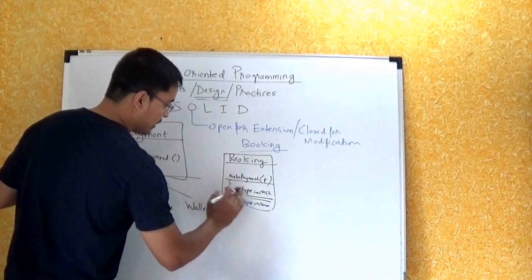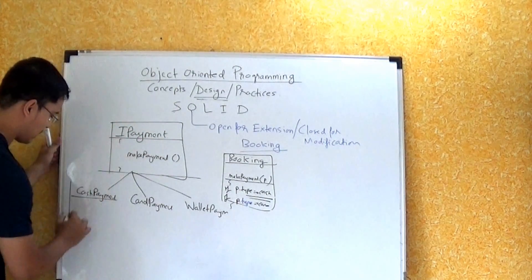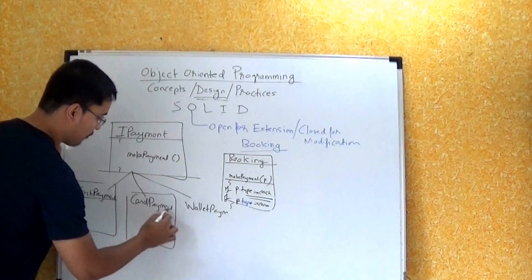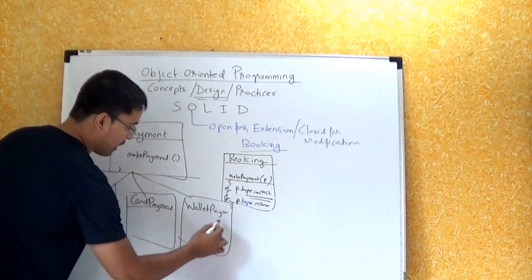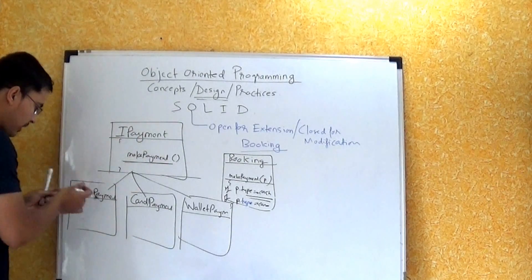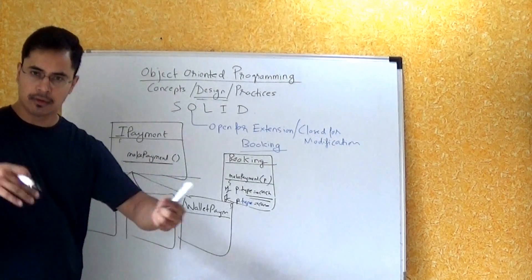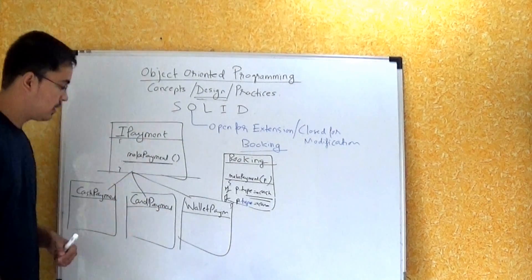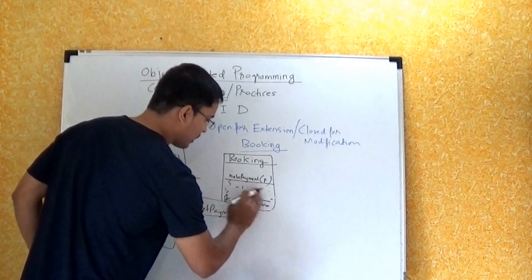And all these classes which are implementing this interface will provide their own implementation of MakePayment. So for CashPayment, MakePayment logic will be different. For CardPayment, MakePayment logic will be different. For WalletPayment it will be different. And here in the booking class